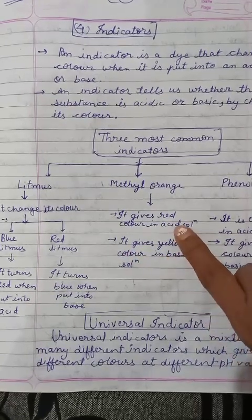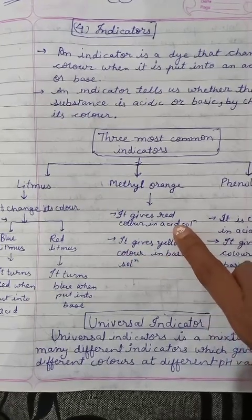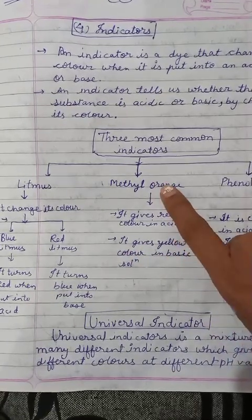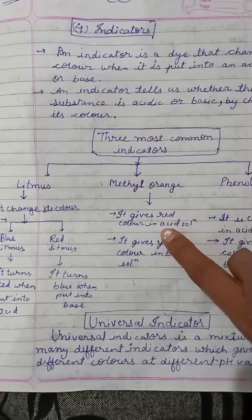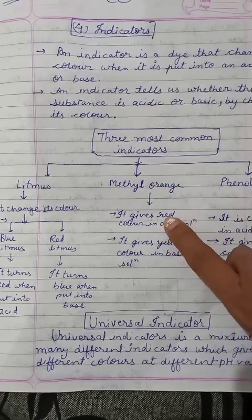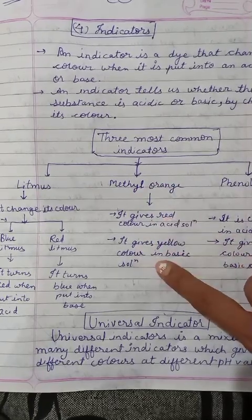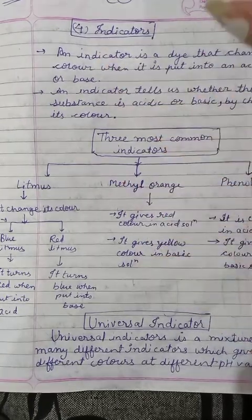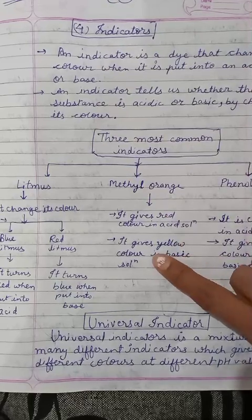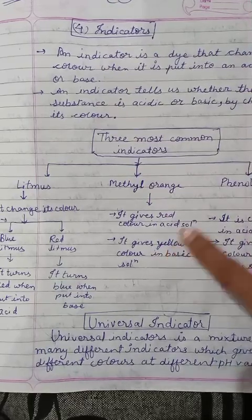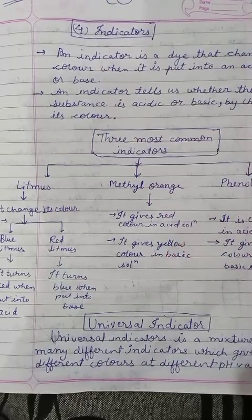If we add acid to methyl orange, the methyl orange color will become red. And when we add basic solution to methyl orange, the color will become yellow.